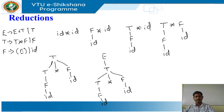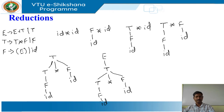Bottom-up parsing is the process of reducing string w to the start symbol of the grammar. At each reduction step, a specific substring matching the body of a production is replaced by the non-terminal at the head of that production. The key decisions during bottom-up parsing are about when to reduce and what production to apply as the parse proceeds. By definition, reduction is the reverse of a step in derivation, so the aim of bottom-up parsing is to construct a derivation in reverse.